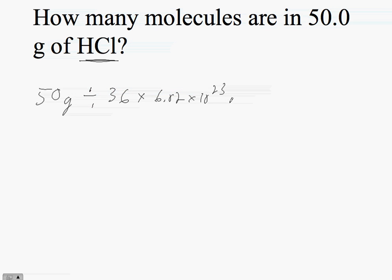We're going from moles to molecules. And when we do that, 50 divided by 36 times 6.02, raised to the 23rd, equals 8.36 times 10 to the 26th molecules.